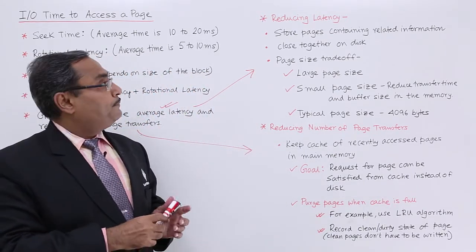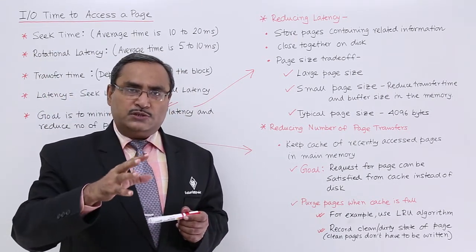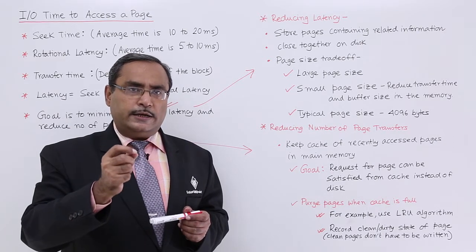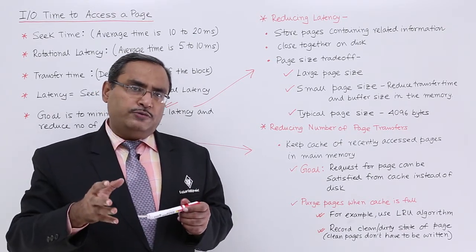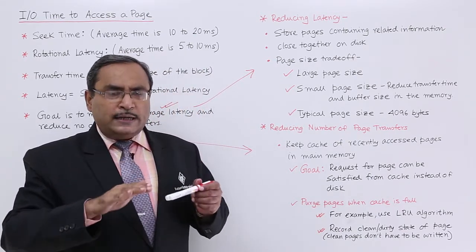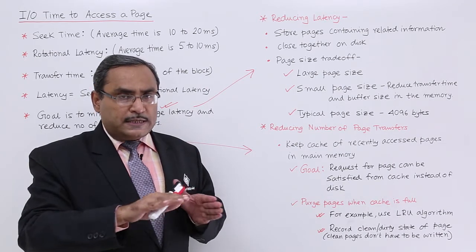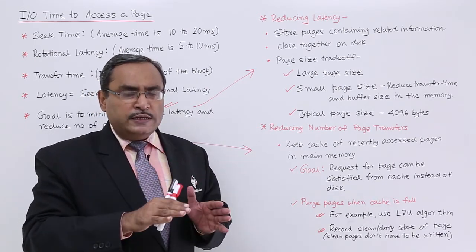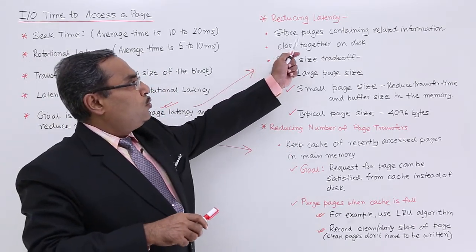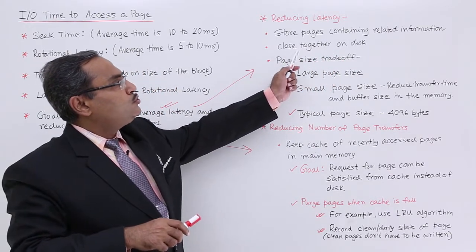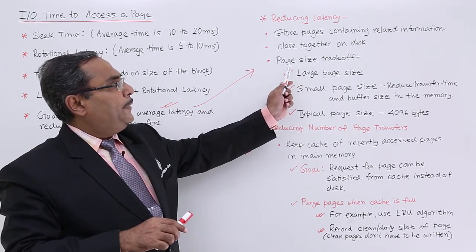Reducing latency: store pages containing related information. If we make our pages which are related, that means after reading a certain data item, the application is most probable to read the required information related with the data item. If we can keep related pages in some related space or very nearby, then obviously the disk read time can be minimized.